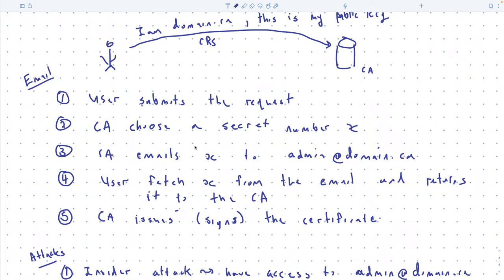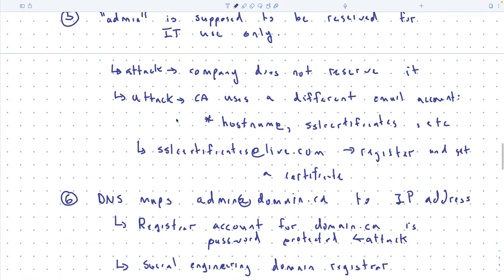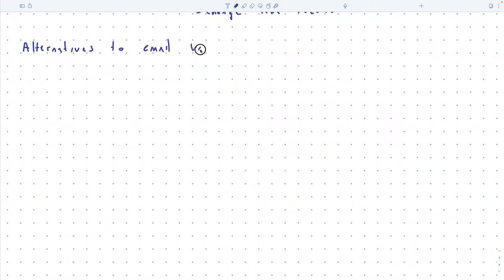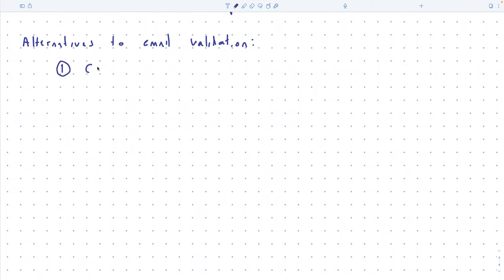So emails sent unencrypted, usernames and passwords, impersonation attacks — all of these work if you can target the right place, and you can completely subvert this whole certificate infrastructure. There are a few other methods used instead of email that basically come down to the same thing. What the user can do instead is put their public key or certificate request directly in the DNS record.